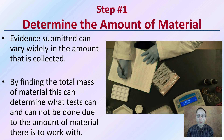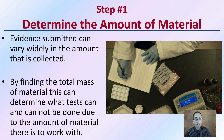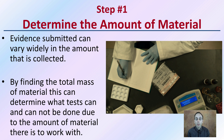Step one is to determine the amount of material. More is not necessarily always better. Evidence submitted can vary widely in the amount collected. By finding the total mass of the material, this can determine what tests can and cannot be done. Where in doubt, try to collect as much as you can within reason, because the amount may limit the procedures carried out. You also want to make sure you're only collecting the isolated material — you don't want other contaminants in there.